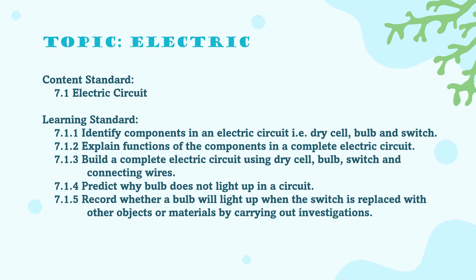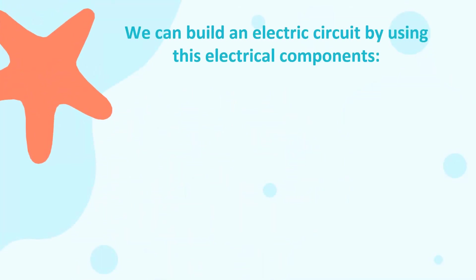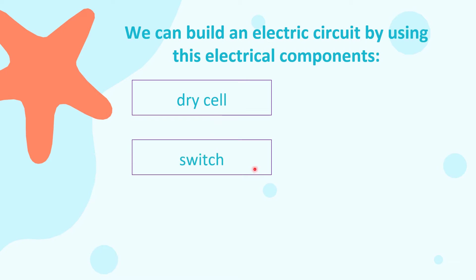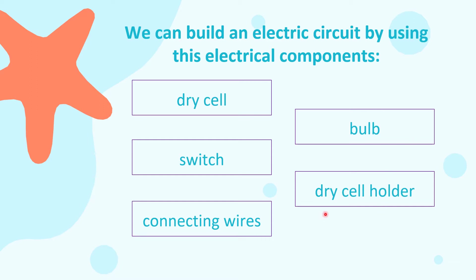Our first topic for today is identifying the electrical components. We can build an electric circuit by using these electrical components. They are: first, dry cell; second, switch; third, connecting wires; fourth, bulb; and fifth, dry cell holder.